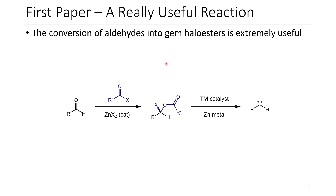The main thing that they do in this paper that I want to highlight is the use of aldehydes. With a zinc catalyst, just using something like zinc chloride or zinc bromide, in the presence of an acyl halide, they're able to convert an aldehyde into a geminal haloester species.